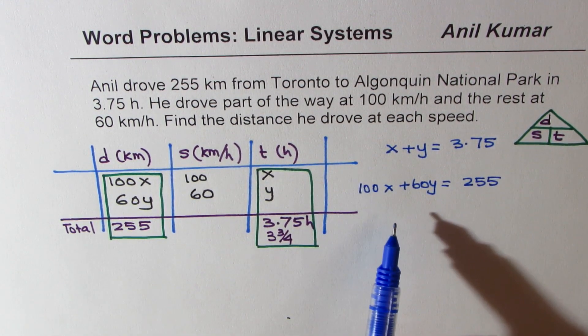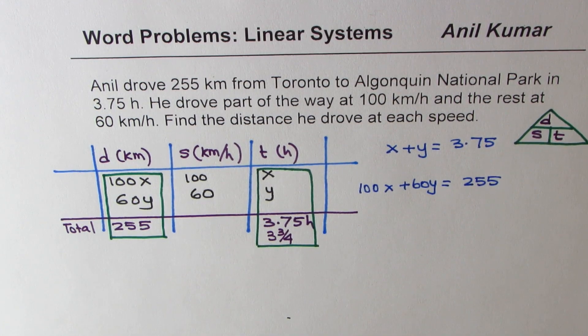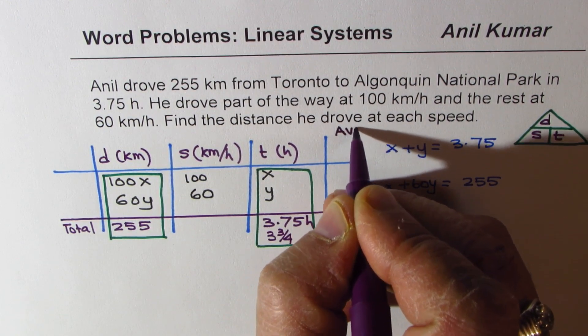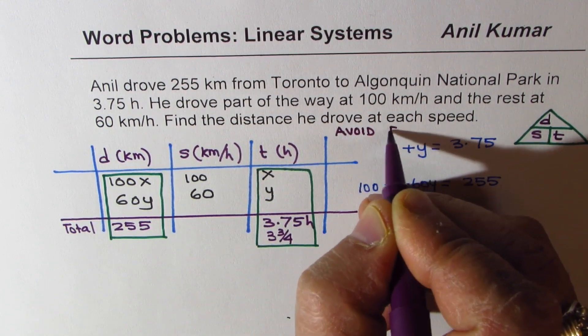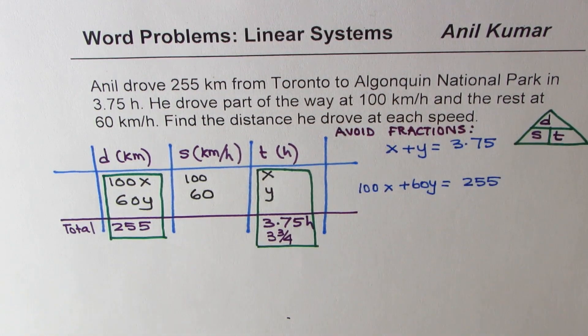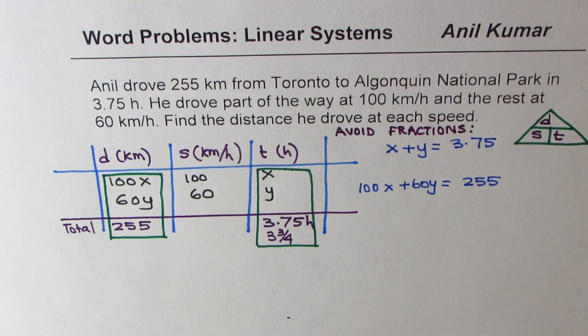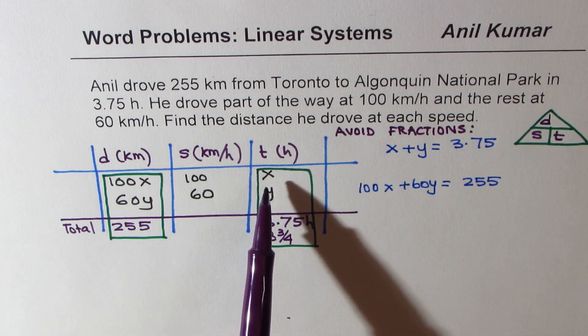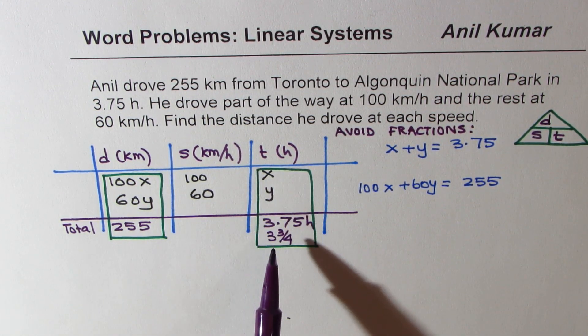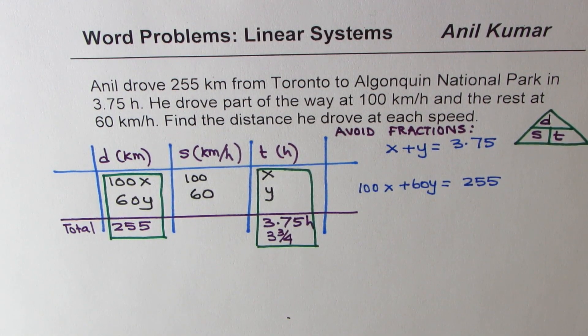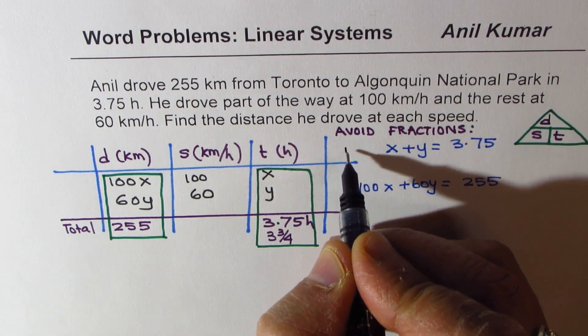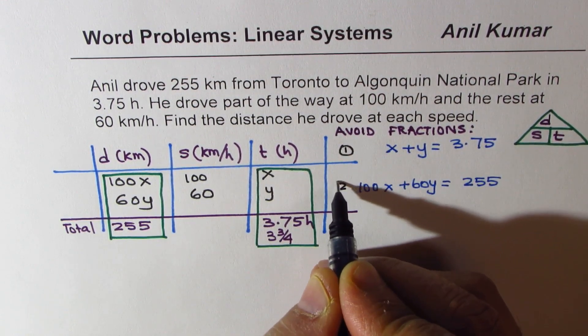Both these equations do not involve fractions. So that is what we have done in doing so: avoid fractions. Did you see that? No fractions. At times, if you define x and y as distances, then you'll get time in fractions and you'll be working with numbers which are difficult to work with. So we have got two equations. Let me call them as equation 1 and equation 2.